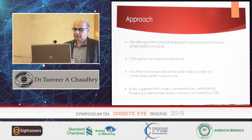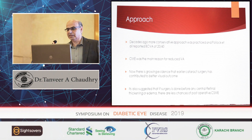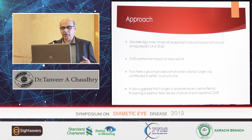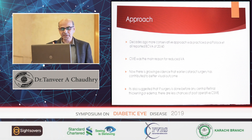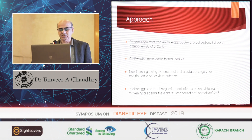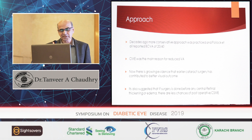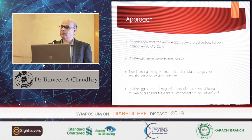How do we approach cataract in diabetics? Previously the approach was more conservative — wait until vision reduces to 6/60 then operate. But the visual outcome was not good because CME and diabetic macular edema were responsible for reduction in most cases. Now there is evidence that if we approach properly and do early cataract surgery, it will contribute to a better visual outcome. It is also suggested that if surgery is done before any central retinal thickening or DME, there are fewer chances of post-operative complications.